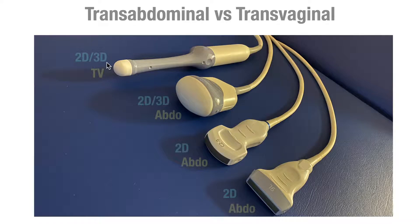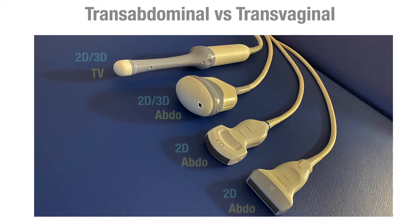During the 11 to 14 weeks, I always start with the abdominal probe. I prefer to use the combined 2D/3D probe because if I want to switch from 2D to 3D, I just have to press one button. If I use only the 2D probe and want to do 3D, I have to change probes entirely. The transvaginal probe can also be used when needed.